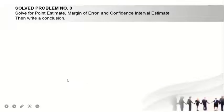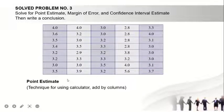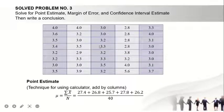Now, solve for point estimate, margin of error, and confidence interval estimate, then write a conclusion. For point estimate, technique for using calculator: add by value. Sometimes we don't compute this manually. Sometimes when we don't have... our mind isn't computing. Going back, we can use the calculator. Add by columns: add this, add the second column, add the third, fourth. Then add them, and this is the result.